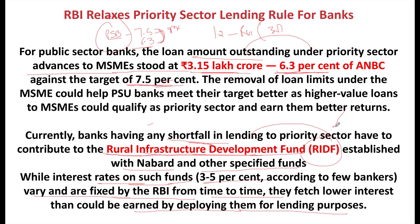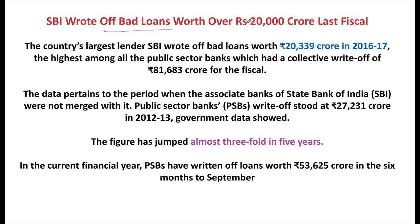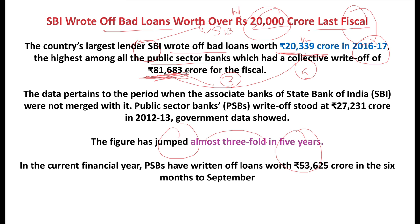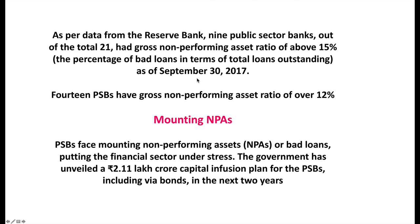State Bank of India wrote off bad loans worth 20,339 crore in 2016-17, the highest among all public sector banks. SBI is a domestic systemically important bank along with HDFC and ICICI. The total loans written off by all public sector banks were 81,683 crore — almost one-fourth was written off by SBI alone. The figure has jumped almost threefold in five years. In the current financial year, PSBs have already written off 53,625 crore in just six months, which suggests the annual figure will cross one lakh crore.